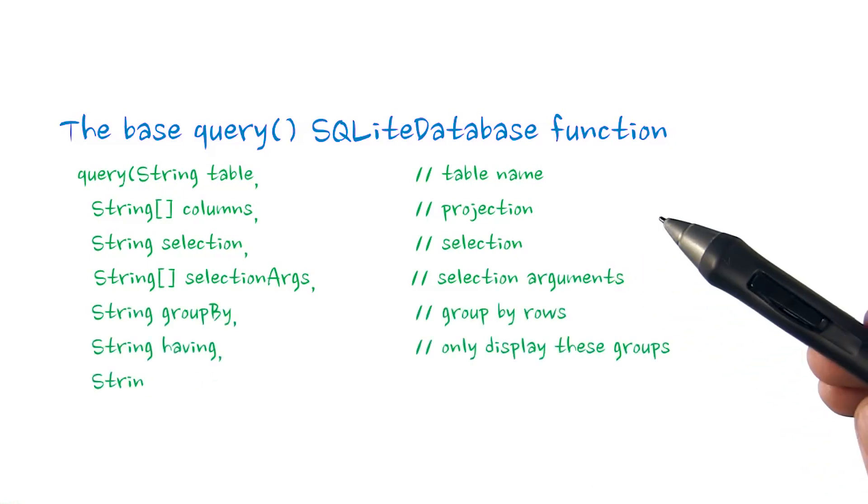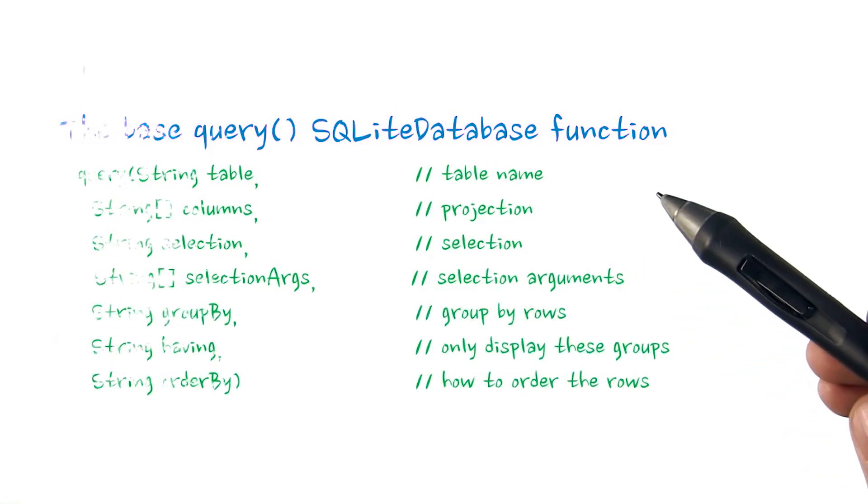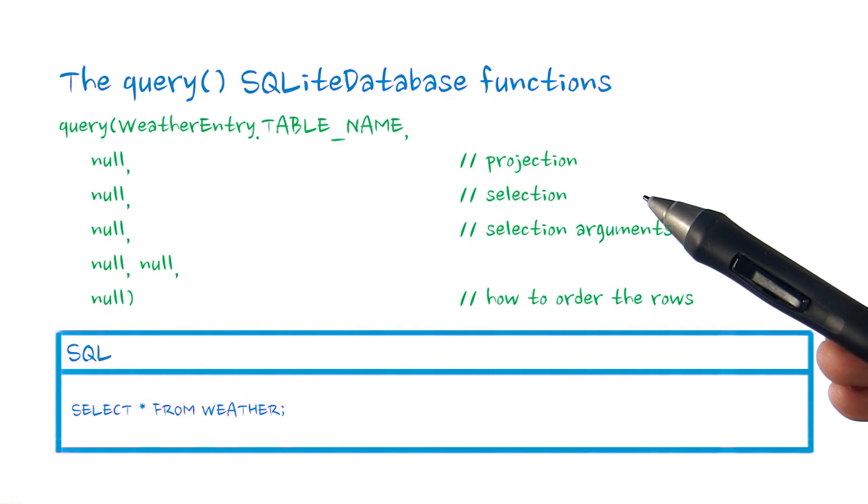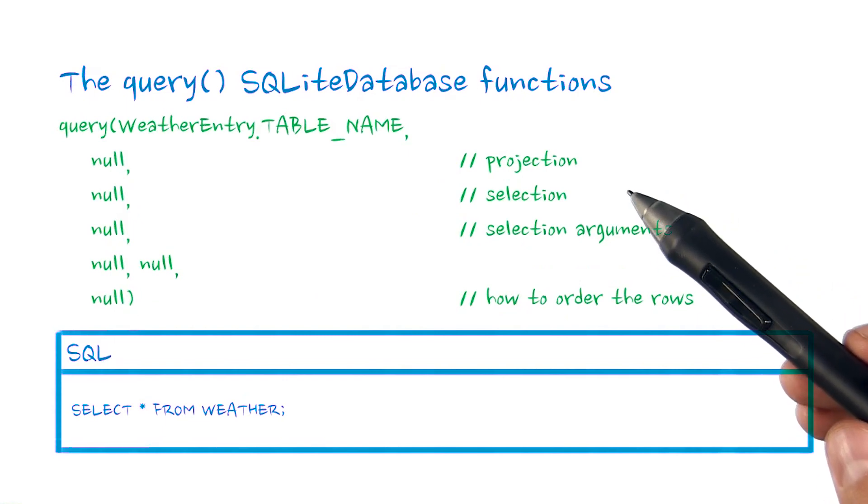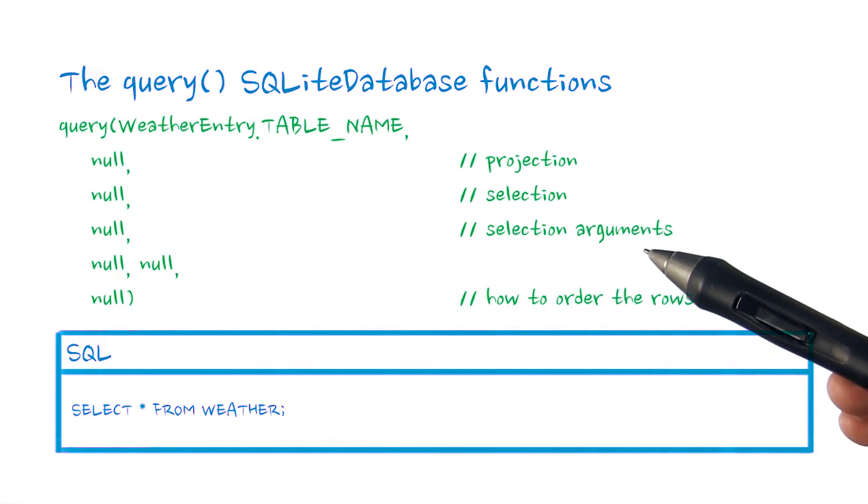Here's what the base SQLite database query function looks like. The most basic query we can make with this only has a table name, and it returns all columns and all records. The rest of the parameters would modify and filter the output of this query.